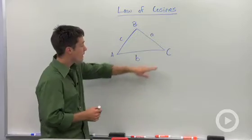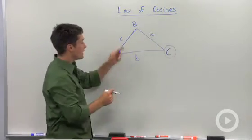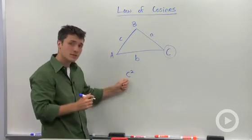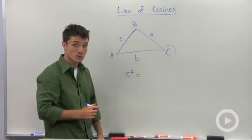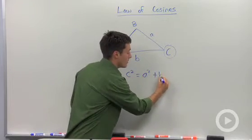And what it says is, if I pick one of these angles, let's say angle C, the side opposite of angle C is side C. And what I can do is I can say that C squared is equal to the other two sides squared. So A squared plus B squared.